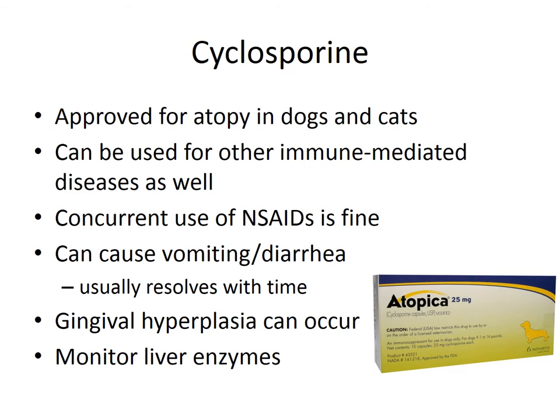Cyclosporine — Atopica — is approved for atopy in dogs and cats but can be used for other immune-mediated diseases too. You can use NSAIDs with it, which is a benefit — for example, an arthritic dog that also has pemphigus or IMHA can use cyclosporine without needing a steroid. The vomiting and diarrhea associated with it usually resolves with time. We always want to monitor liver enzymes, and if they start going up, we assess for actual liver disease.